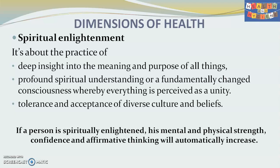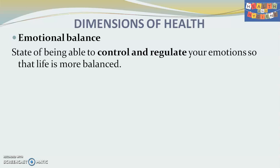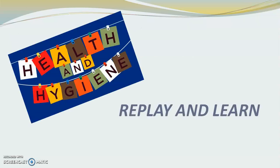If a person is spiritually enlightened, his mental and physical strength, confidence, and affirmative thinking will automatically increase — that is essential for development and achievement in society. The next aspect is emotional balance and stability. We should be emotionally stable — this is the state of being able to control and regulate your emotions even in all tough situations in life, so that life is more balanced.